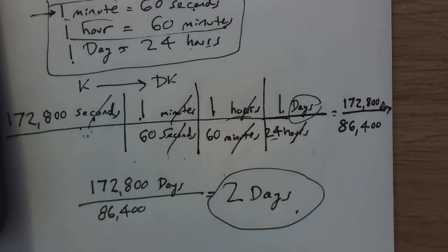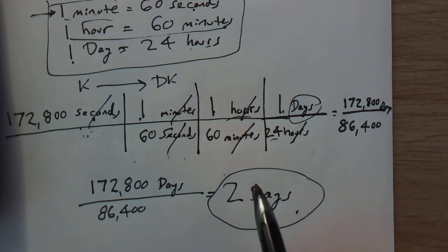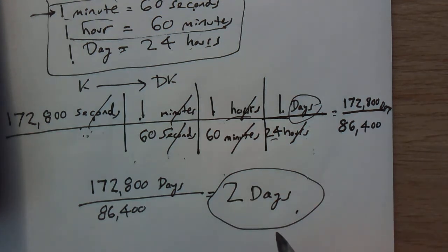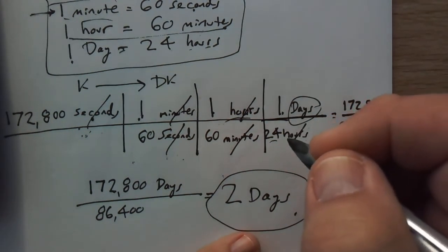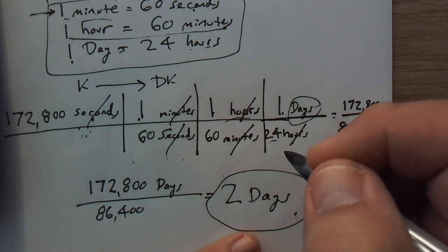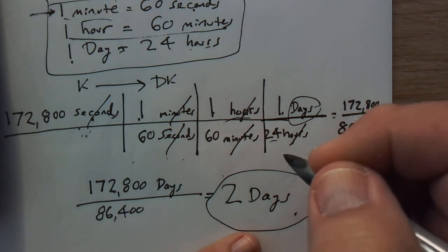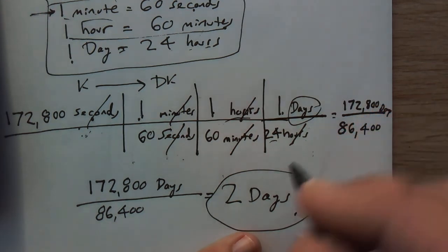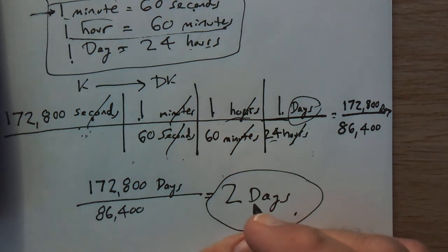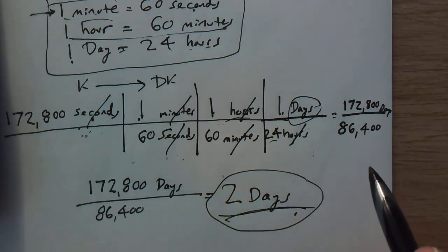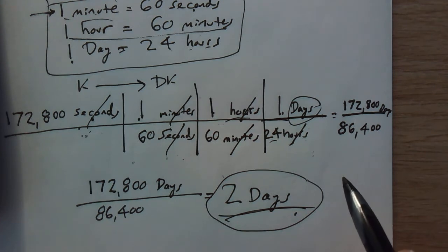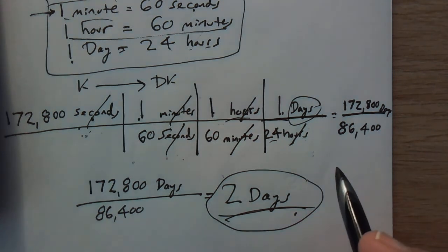This is how you do unit conversions using the picket fence method — one of my favorite methods — and it can be done with all kinds of conversions. Hopefully you found this helpful. If so, please give this video a like, it will help this information reach others. Subscribe to my channel to help it grow and hit the alert button for notifications whenever I post a new video. Until next time, keep your grade alive and subscribe — thank you.